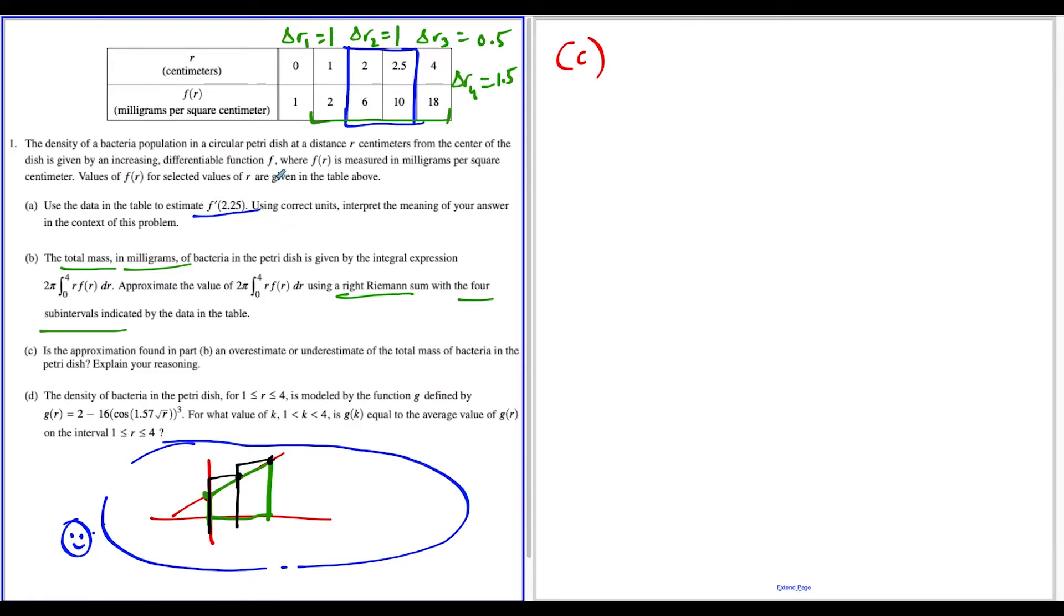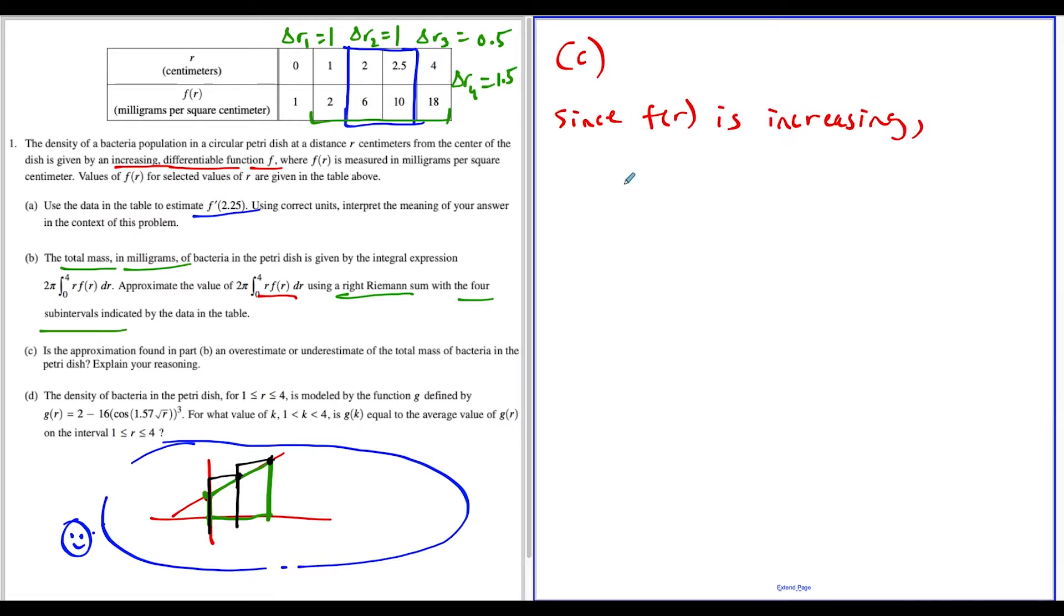Now, the only thing we have to be very careful with when we explain this is we have to say that because f of r is an increasing function—we have here the function f is increasing and differentiable—we have to specifically mention that r f of r is an increasing function. Once we mention that r f of r is increasing on this interval, then we can draw our conclusion that the right Riemann sum is an overestimate of the total mass of bacteria.